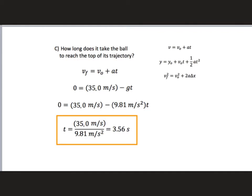Part C asks how long it takes the ball to reach the top of its trajectory. Over here on the right I have written down those three most useful kinematics equations. The way we work these problems is we pick one equation and start plugging in values. If we have everything we need, we solve for the unknown. If there are too many unknowns, we go to the next equation and try that one. Think about what you're given, what you're trying to solve for, and find which equation relates the known quantities to the unknown.